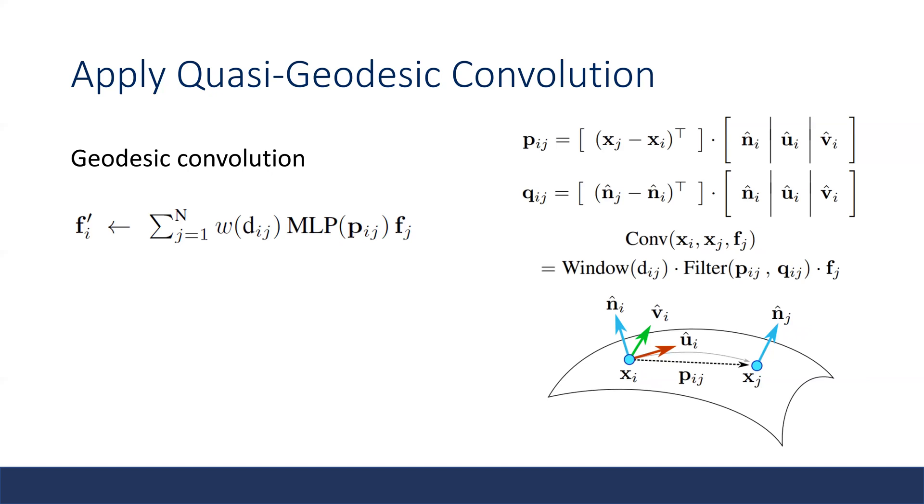The filter is a simple MLP which is either a one-layer MLP or three-layer MLP. The input of the MLP is two 3D vectors, each computed in the local coordinates of XI. The convolution is summed over together to give a final output of the filter vector.